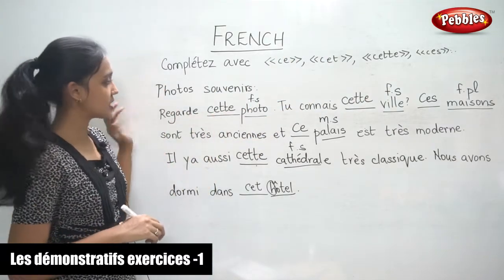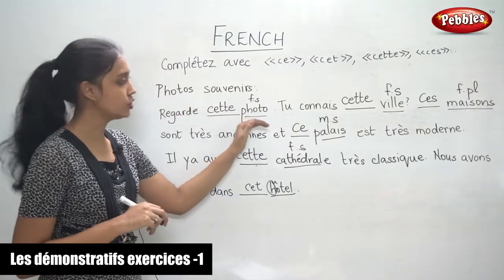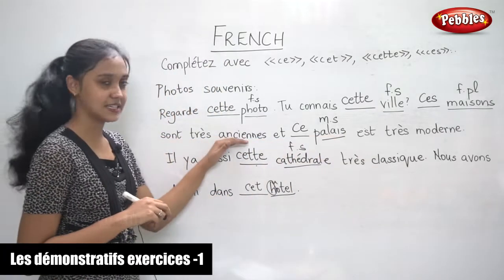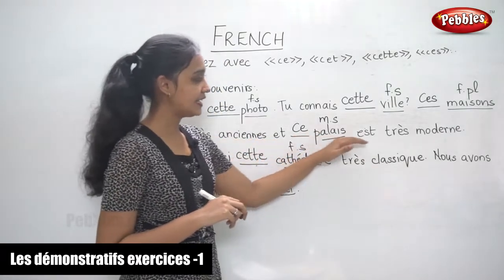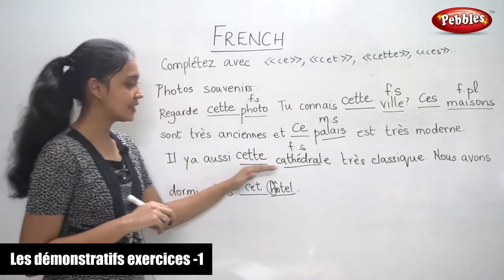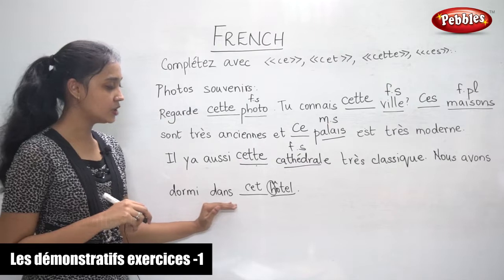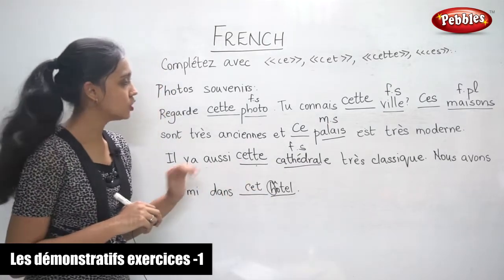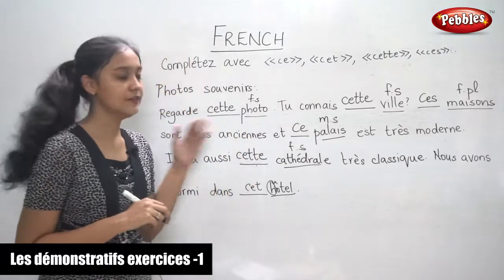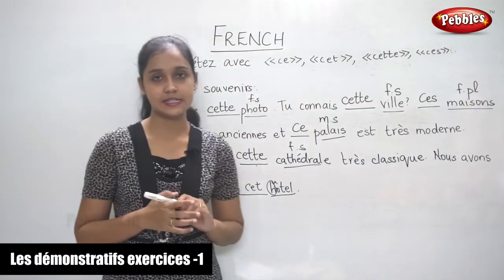Read this along with me once again. Photos souvenirs. Regarde cette photo. Tu connais cette ville. Ces maisons sont très anciens. Et ce palais est très moderne. Il y a aussi cette cathédrale, très classique. Nous avons dormi dans cet hôtel. So now you know how to fill in the demonstratives in the blanks. We will do one more paragraph like this.